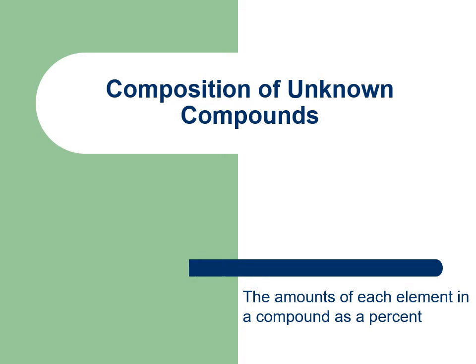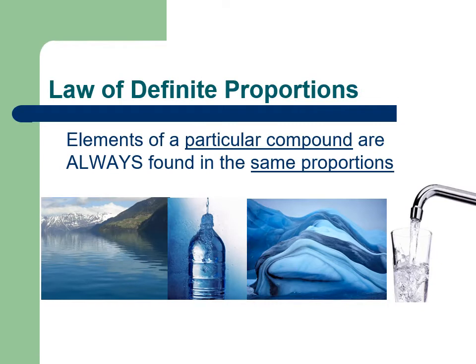Composition of unknown compounds is essentially a way of representing how much of each element is in a compound as a percentage. This is going to be based on the law of definite proportions, which basically says that if a compound has a formula, that's what it's going to have and it's not going to change.